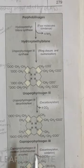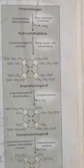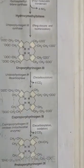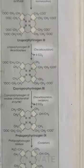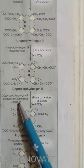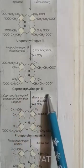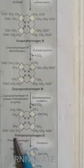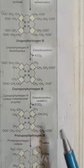Coproporphyrinogen III is also a ring-shaped structure. It is converted into protoporphyrin by an oxidase enzyme present in the mitochondrial area — a mitochondrial enzyme — converting coproporphyrinogen III into protoporphyrinogen IX. Protoporphyrinogen IX is then converted into its active form, protoporphyrin IX, also a ring-shaped structure, by porphyrinogen oxidase enzyme. The '-ogen' suffix denotes precursor forms.